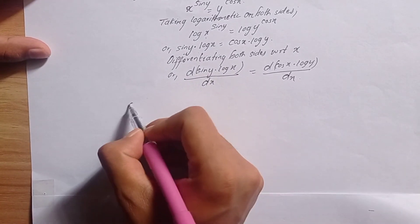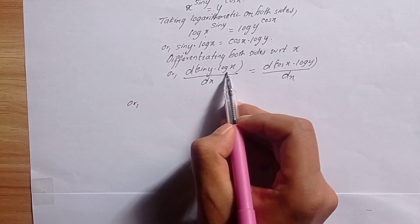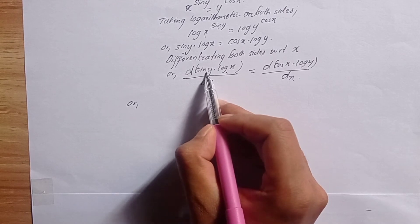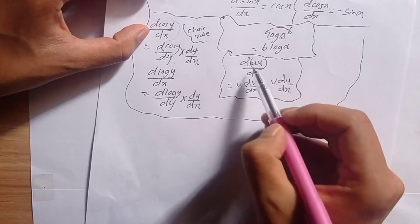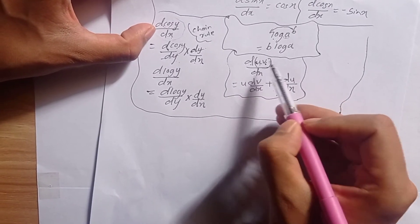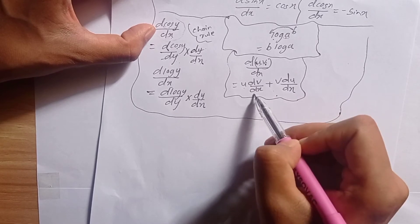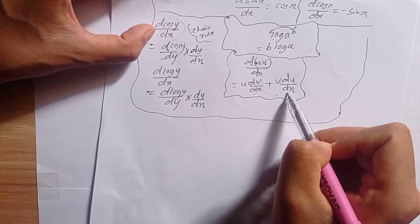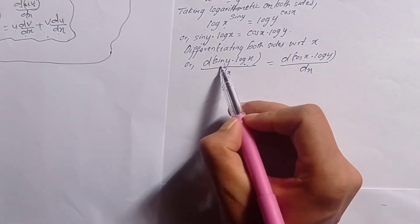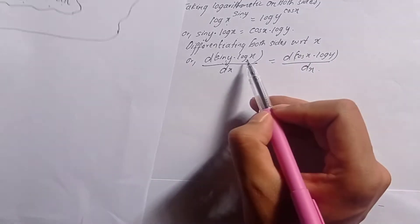On the left-hand side, we use the product rule where u is sin y and v is log x. So applying the formula: u times dv/dx plus v times du/dx.